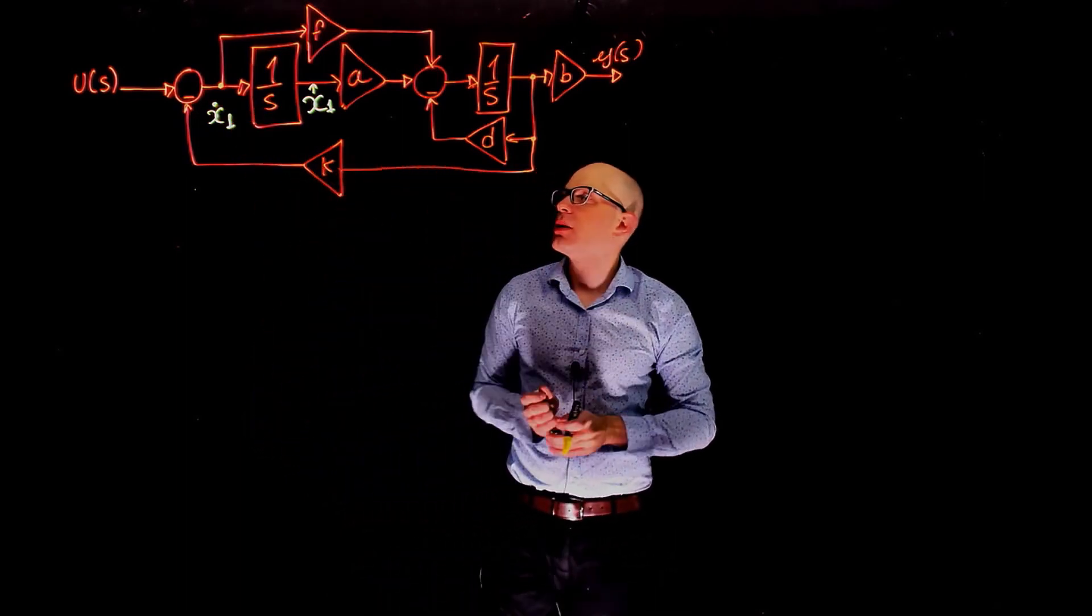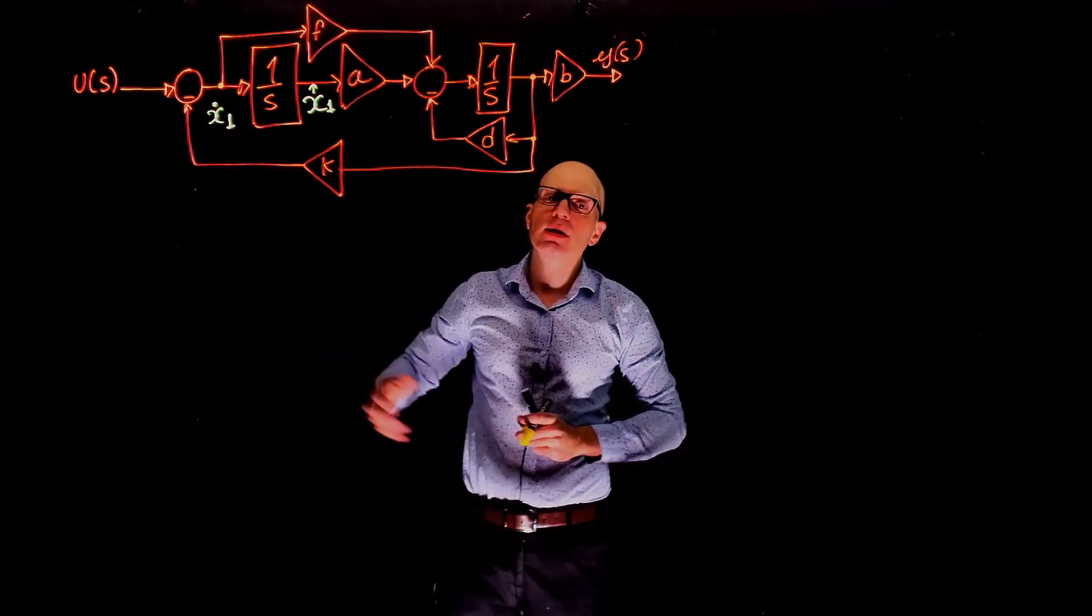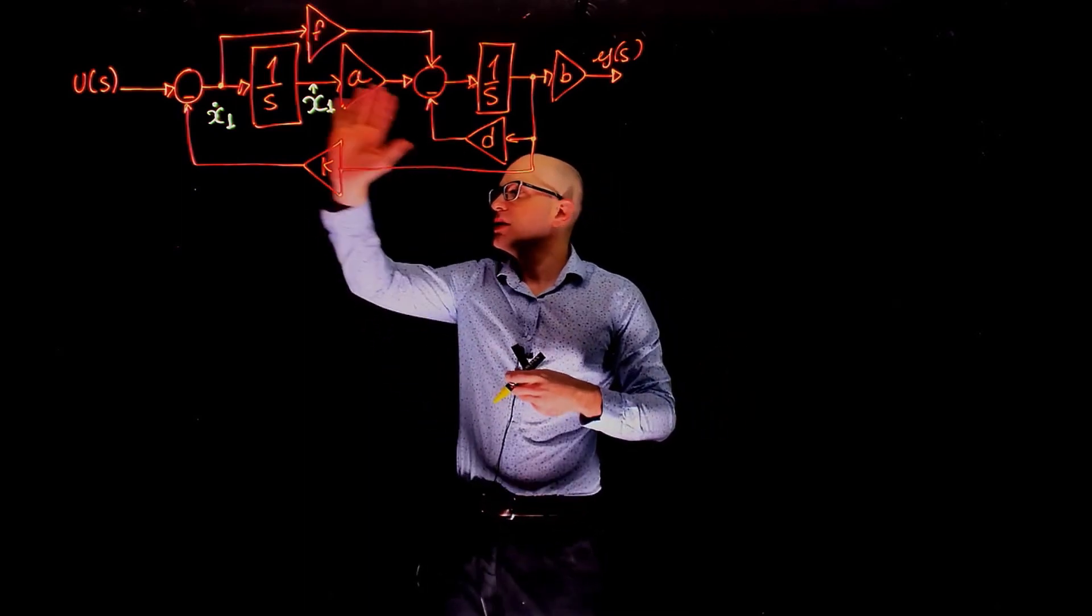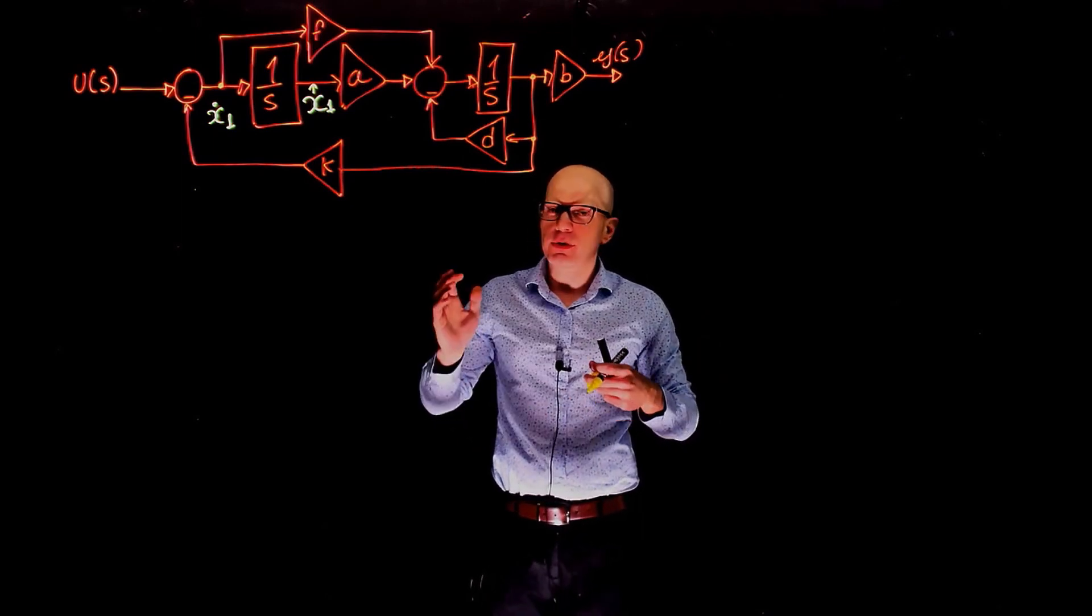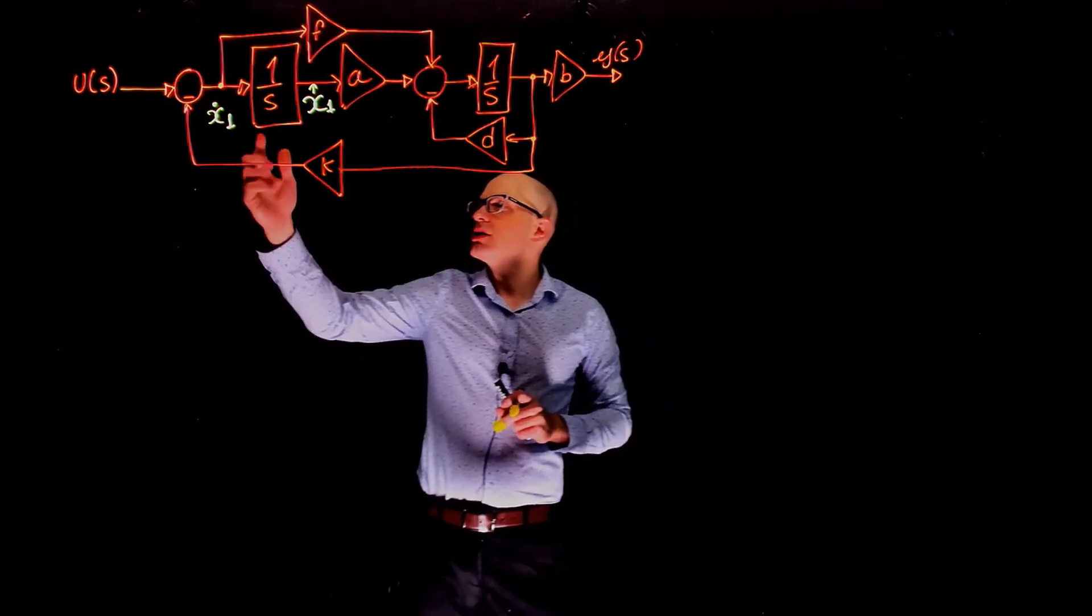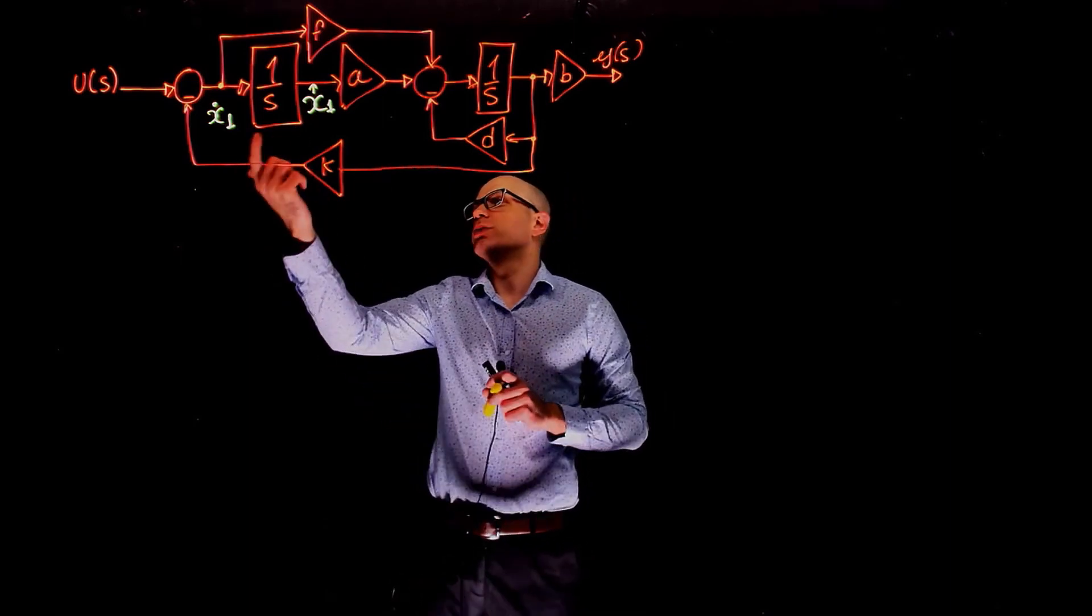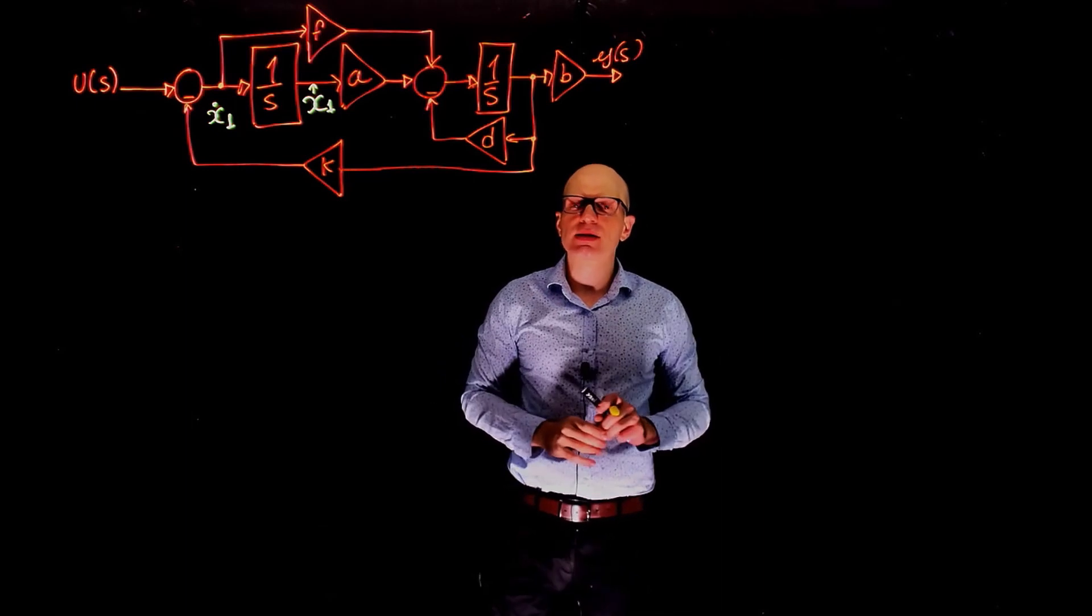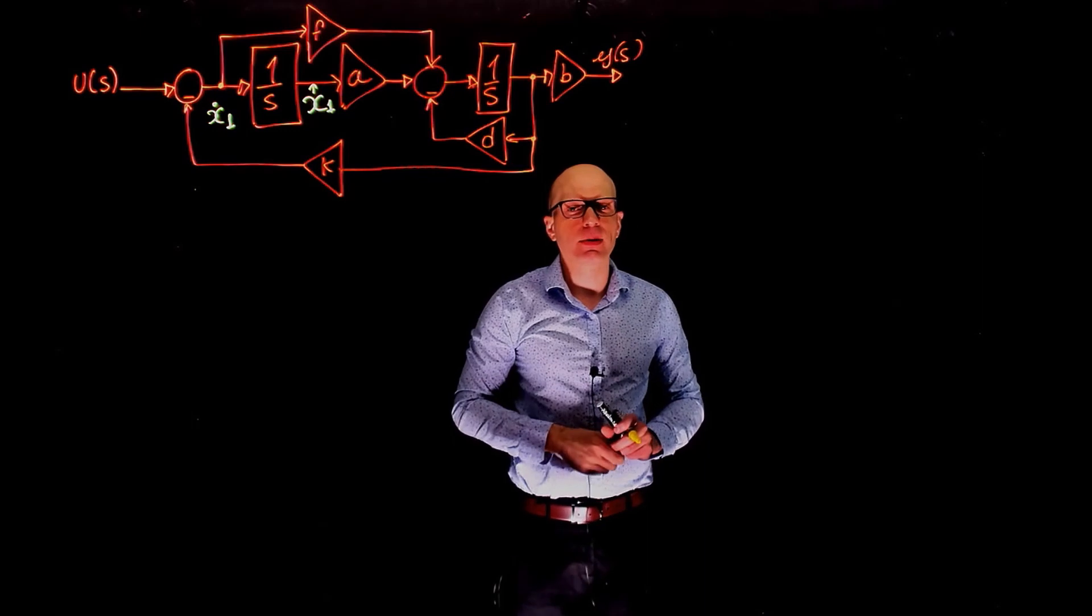Now here I just committed a mathematical crime because I'm mixing two different notations. x dot defines the derivative of x in the temporal domain, but this whole block diagram is expressed in the frequency domain. But for simplicity, I'm going to write x dot 1. Of course, this should have been x of s times s, which is the derivative of x1 of s. But for simplicity, let's accept this monstrosity of having temporal domain and Laplace domain in the same representation.